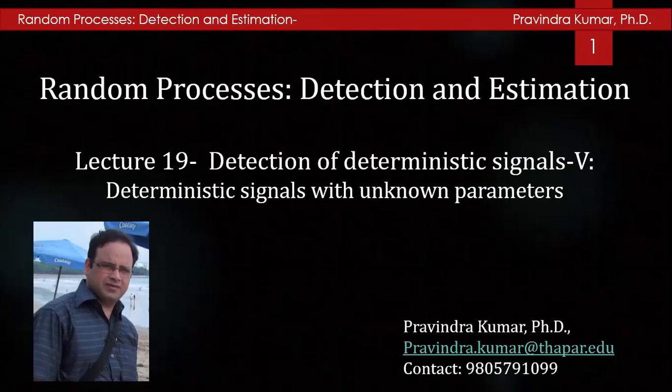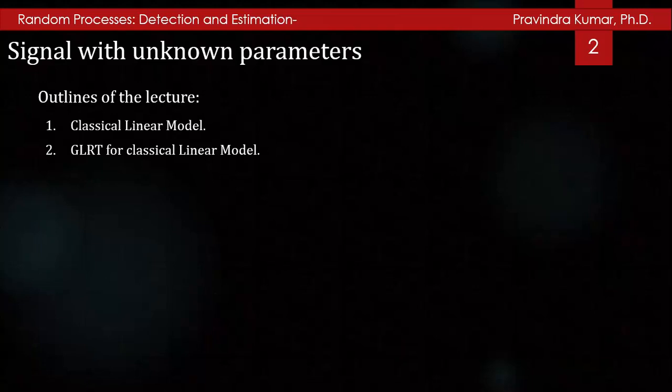Welcome to the lecture series of Random Processes Detection and Estimation. This is the 19th lecture of this series. In the previous lecture, we discussed detection of deterministic signal with unknown amplitude, phase, frequency, and arrival time, and we also discussed the concept of the linear model. In this lecture, we will continue our discussion about the classical linear model. The outline of this lecture covers the classical linear model and the generalized likelihood ratio test for the classical linear model.